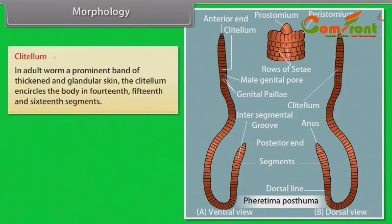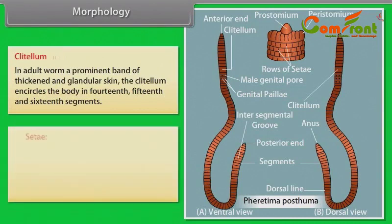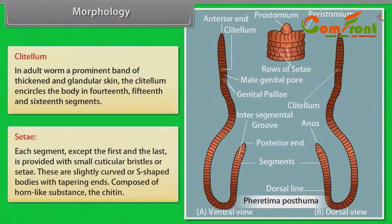Clitellum: In an adult worm, a prominent band of thickened and glandular skin called the clitellum encircles the body in the 14th, 15th and 16th segments. Setae: Each segment except the first and the last is provided with small cuticular bristles or setae. These are slightly curved or S-shaped bodies with tapering ends, composed of chitin.